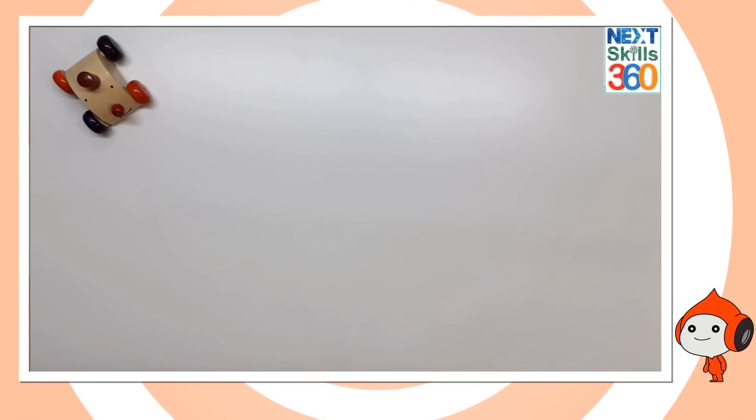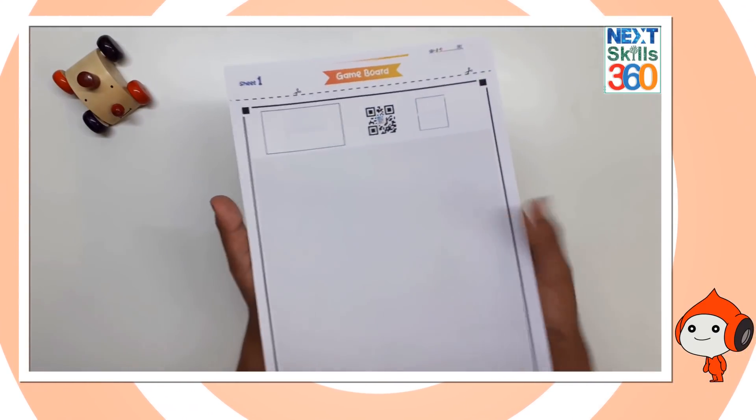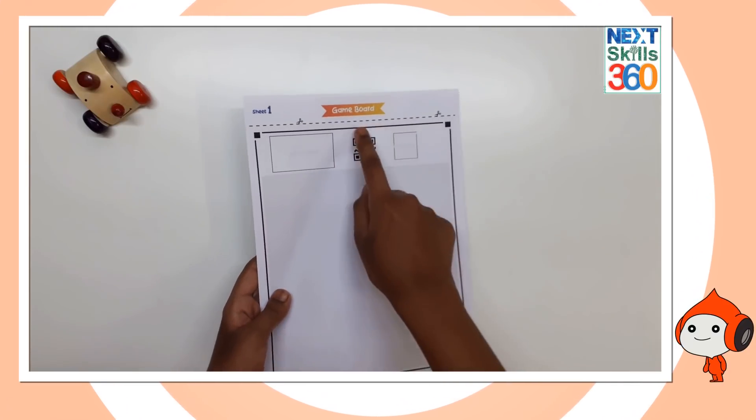I'm going to show you how to make our very own program DIY kit. Let's get started. First we need to take prints of the sheets. Here I have taken the prints of sheet 1, which is our game board.